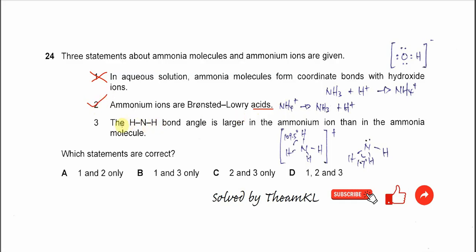The last one: the HNH bond angle is larger in ammonium than in the ammonia molecule. Ammonium, the geometry of the nitrogen is tetrahedral. The bond angle of this HNH is 109.5 degrees.